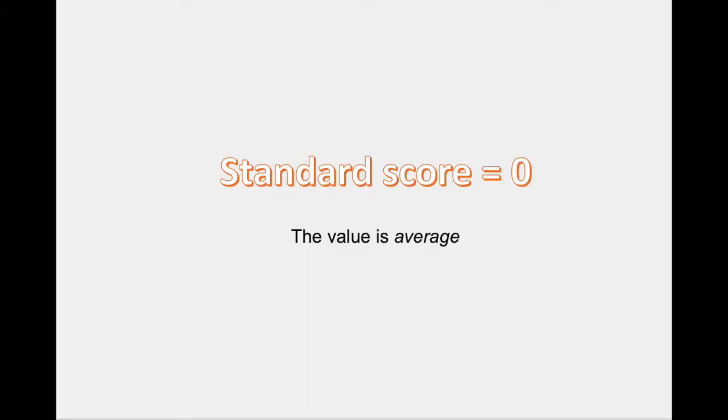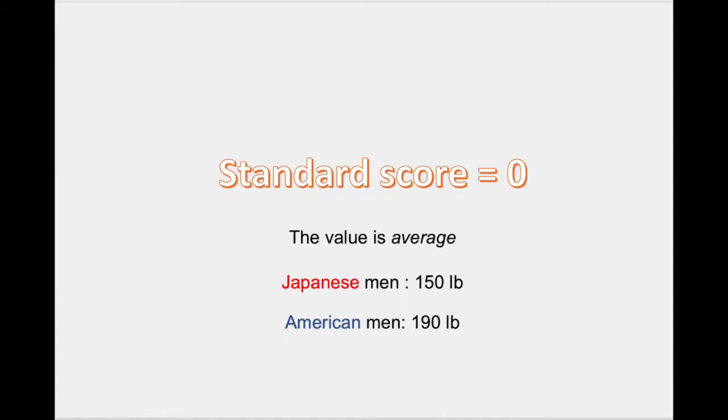The beauty of this standardized scale is that it is easy to interpret. If someone tells you that the standard score is around zero, you know that the value is right around the average — the average value of whatever is being measured. You don't even actually have to know what the original units are. For example, in our data, a value of zero will correspond to the national average weight: for Japanese men this is around 150 pounds, and for American men it's around 190 pounds.